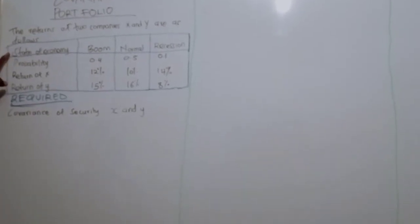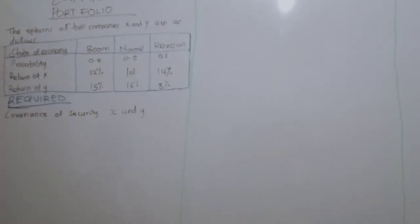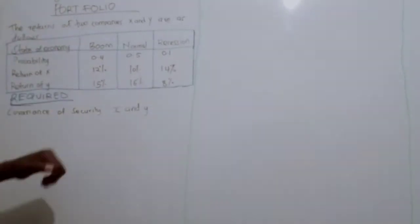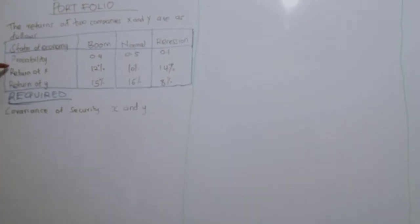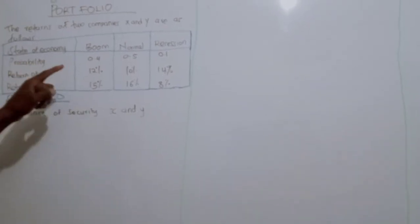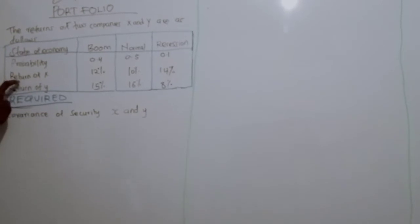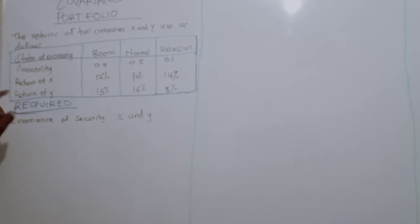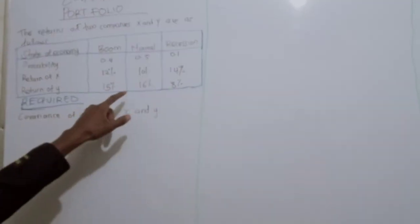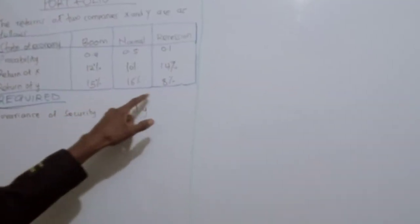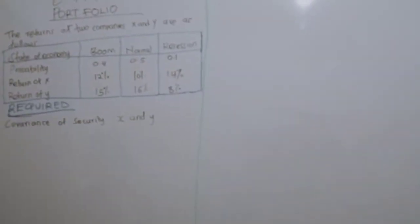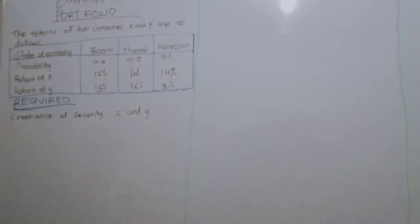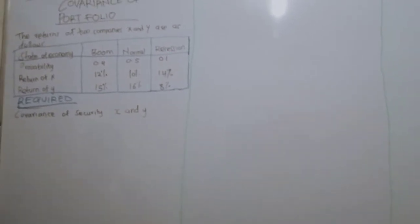We have the state of the economy: we have boom, normal, and recession. We have the probabilities 0.4, 0.5, and 0.1. We have the returns of X: 12%, 10%, 14%. The returns of Y: 15%, 16%, and 8%. Required: covariance of security X and Y.